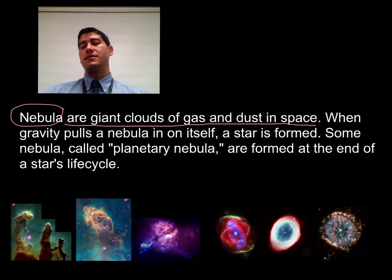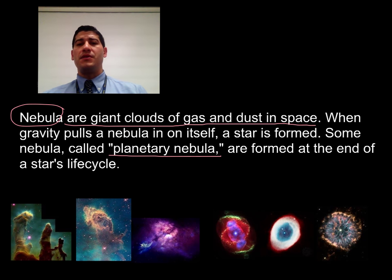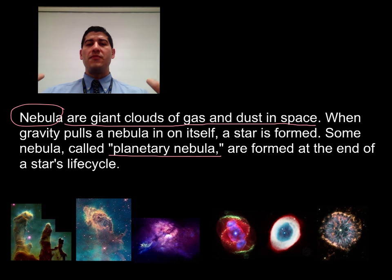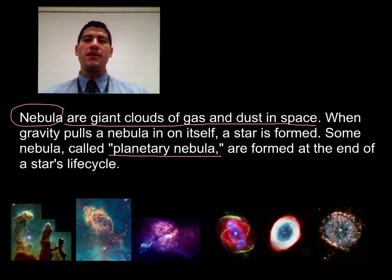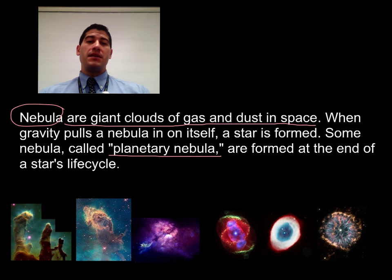Some nebulae, however, are the remnants of dead stars. They're called planetary nebulae, even though they have nothing to do with planets. The person who discovered them thought that they had something to do with planets, but they didn't, and they got stuck with the name anyway. A planetary nebula forms when a star's gravity can't hold it together anymore. When that happens, the outer layers of the star drift back off into space, leaving only the core of the dead star, which is a white dwarf star. This white dwarf star is surrounded by a nebula. These three images on the right side of the slide are planetary nebulae, and you can clearly see the white dwarf at the center of each.